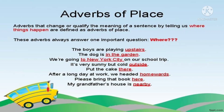Now comes the second type of adverb: adverbs of place. Place ka matlab aapko clear ho raha hai ki yahaan par koi bhi action, koi bhi verb, kahaan par ho raha hai, uska significance milta hai. Adverb of place hamesha ek question ka answer deta hai — 'Where?' Yani ki kahaan. For example: 'The boys are playing upstairs.' In this sentence, 'upstairs' is the adverb of place — the boys are playing where? Upstairs. Another example: 'The dog is in the garden' — the dog is where? In the garden.